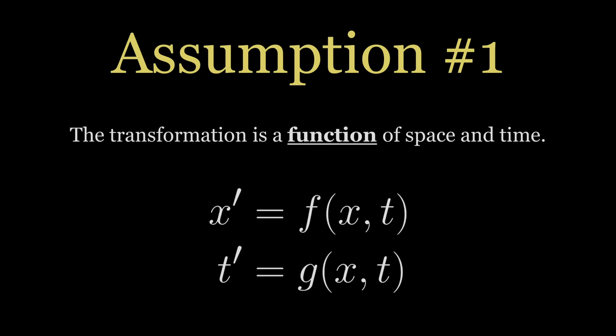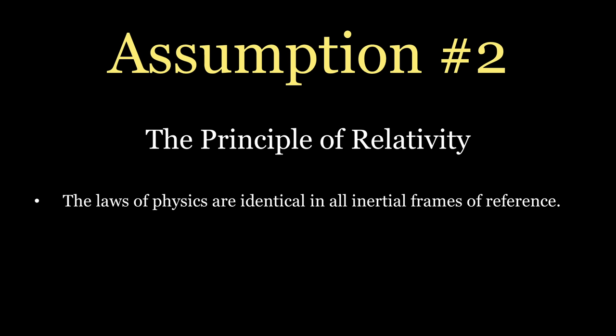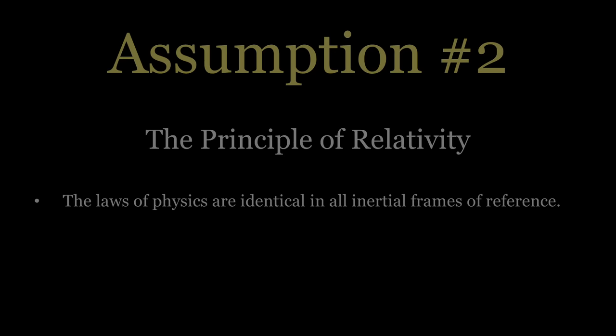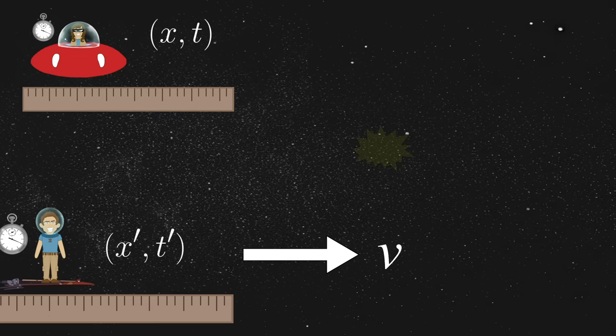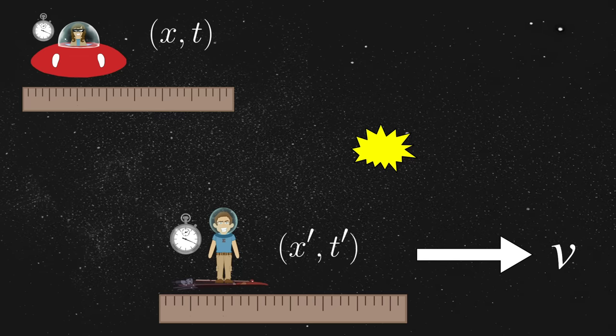Assumption number two. The laws of physics are identical in all inertial frames of reference. This is known as the principle of relativity, and it is a cornerstone of our entire understanding of motion through space and time. Basically, it tells us that there is no reason to think Annie's frame of reference is fundamentally different from Jim's. Presumably, the universe does not care that Annie is four feet to the left of Jim or 100 miles to the right.